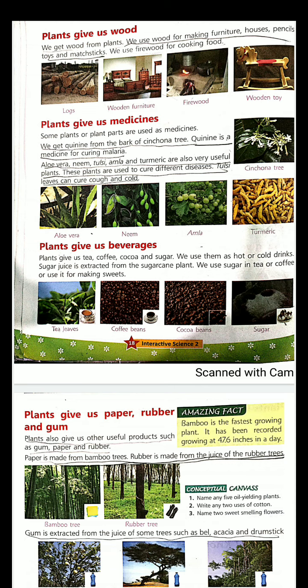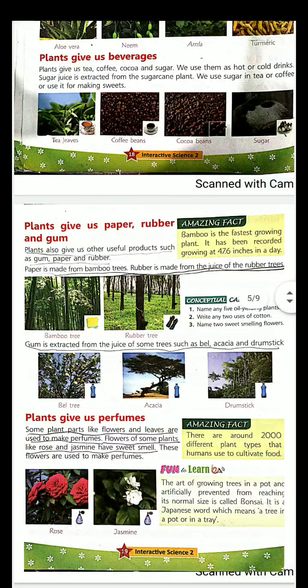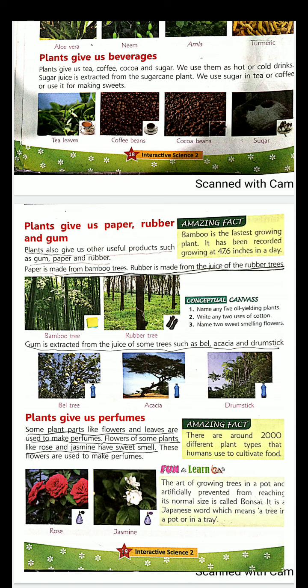Then we studied that plants also give us paper, rubber and gum. Bamboo tree gives us paper, rubber tree gives us rubber, and trees like bell and drumstick give us a juice which is used to make gums.